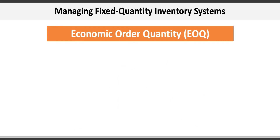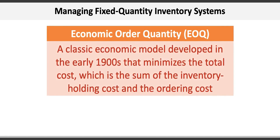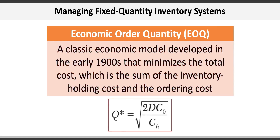One of the most common models used to manage fixed quantity inventory systems is the economic order quantity, or EOQ, model. This is a classic economic model developed in the early 1900s that minimizes total cost, which is the sum of inventory holding costs and order costs. The economic order quantity Q* — also known as the optimal order quantity — is equal to the square root of (2 × demand × ordering cost) divided by the holding cost.